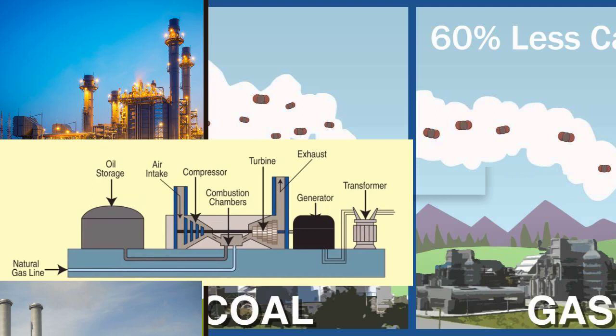Gas power plants typically use a gas turbine or a combination of gas and steam turbines to convert the energy in natural gas into electricity. The basic process involves burning the natural gas in a combustion chamber to produce high-temperature, high-pressure gas.